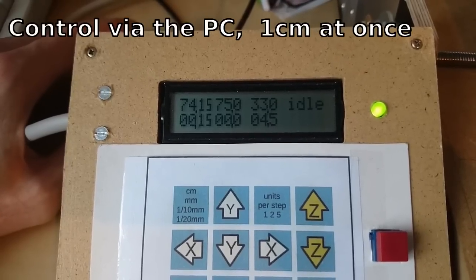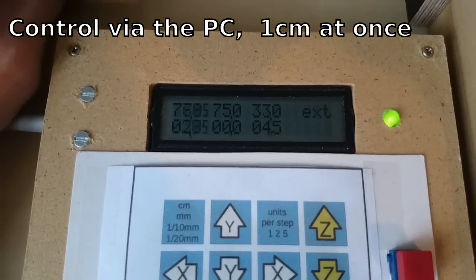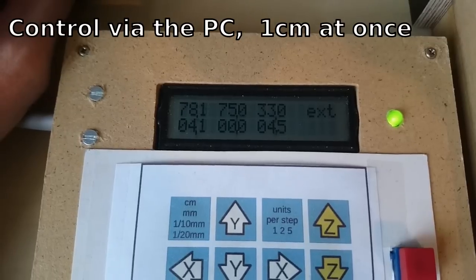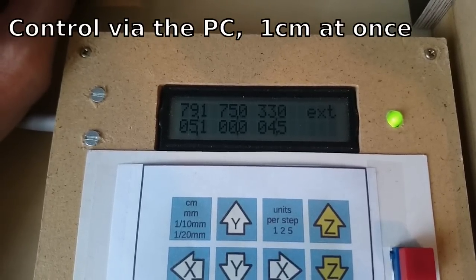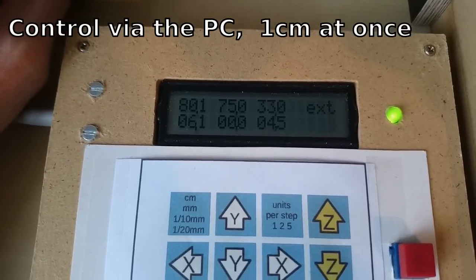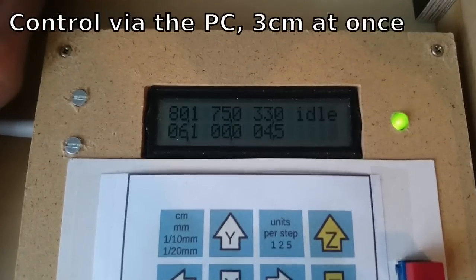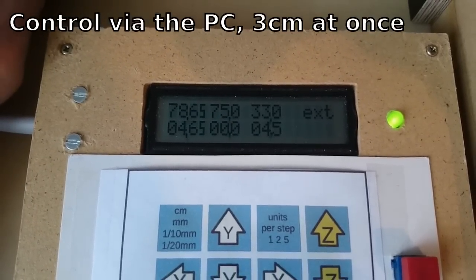Here I move the machine with the universal G-code sender. As long as it moves slowly the counter works correctly, but at higher speeds it starts to miss counts. You can see how the display stops updating sometimes here.